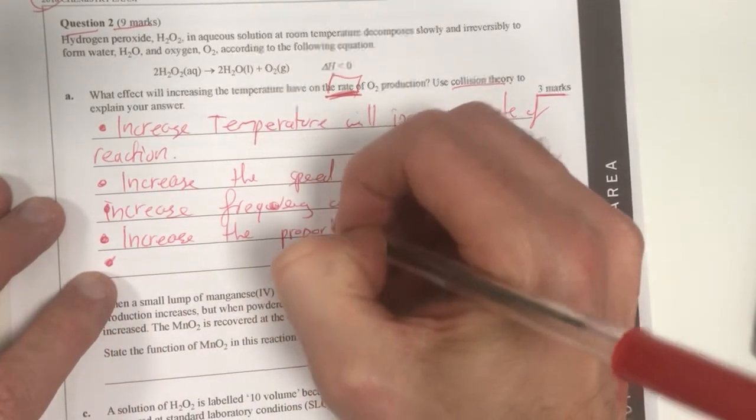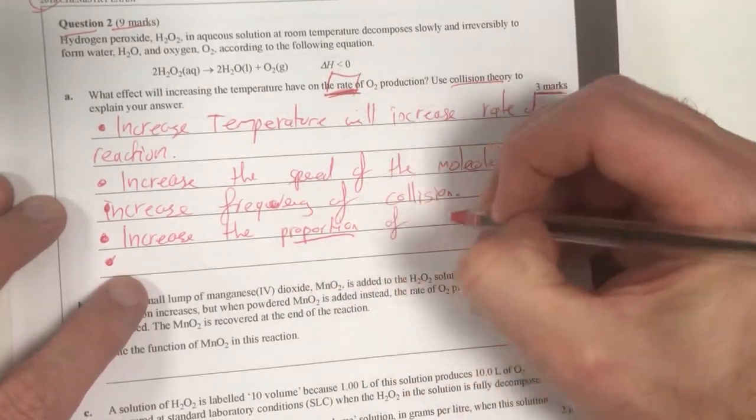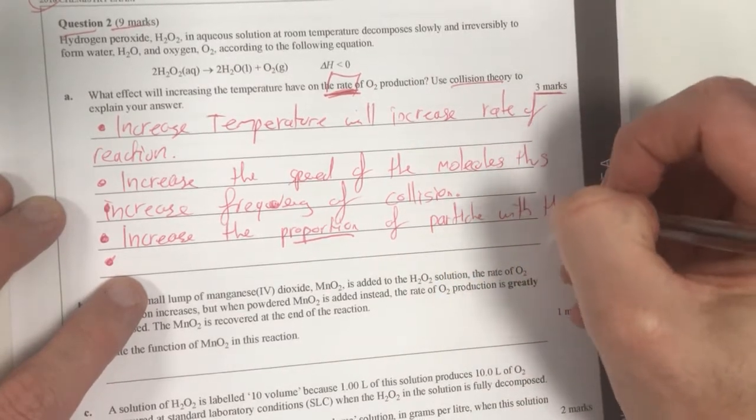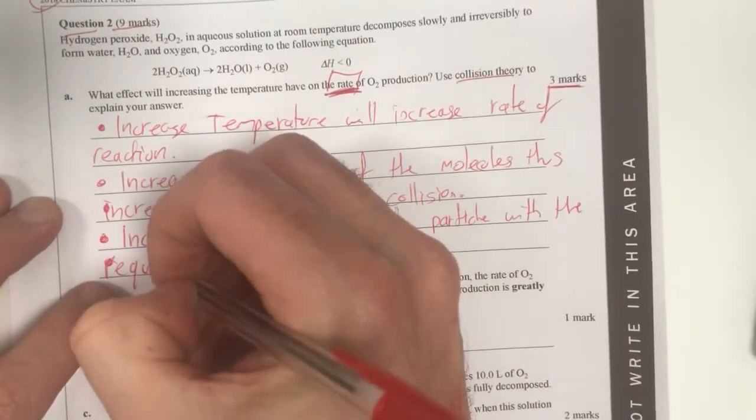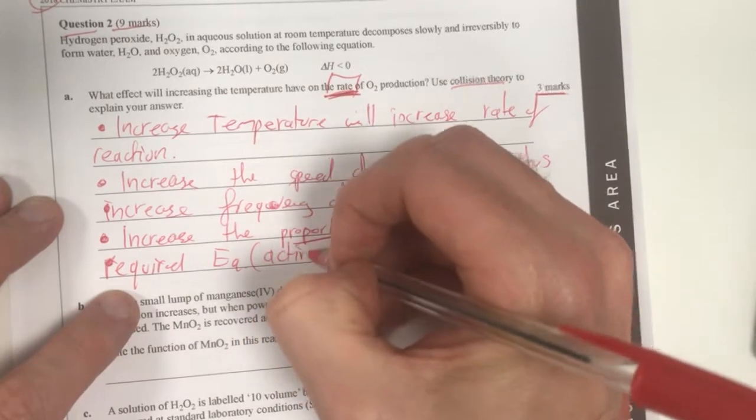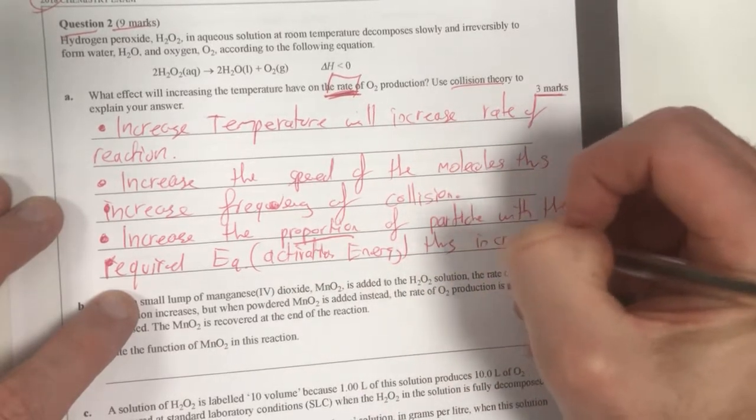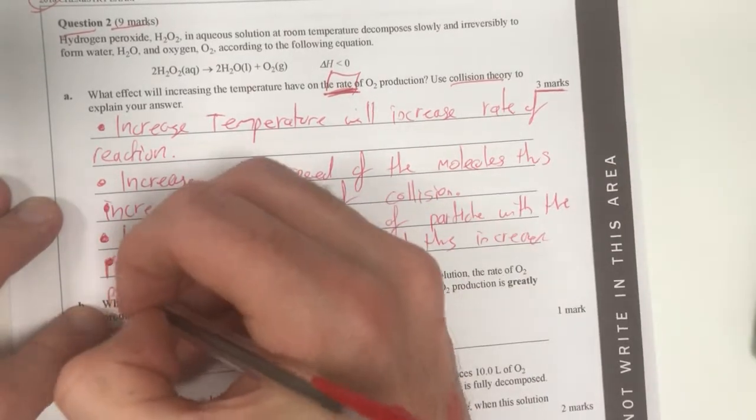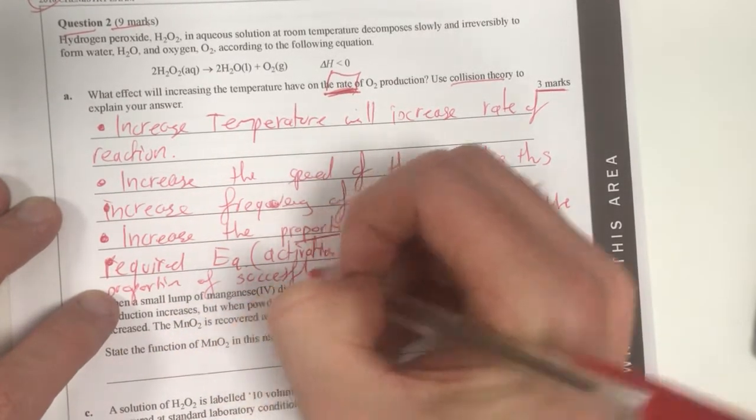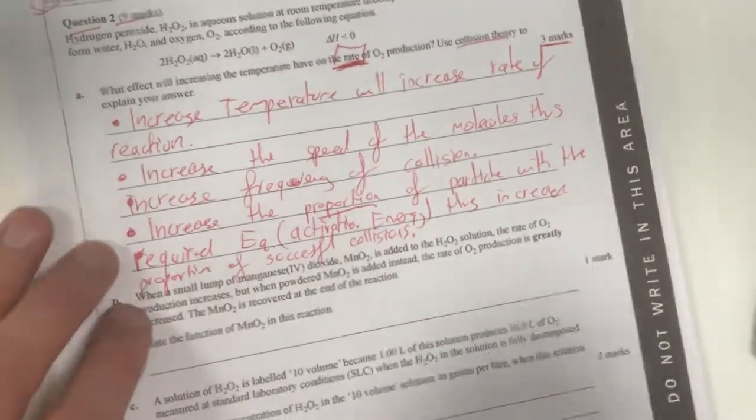It increases the proportion - this word proportion is really important in this area when you're talking about temperature. Increases the proportion of particles with the required activation energy, EA. Thus increases the proportion of successful collisions.